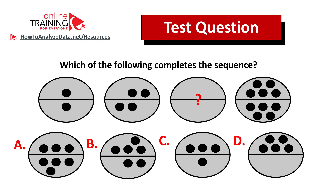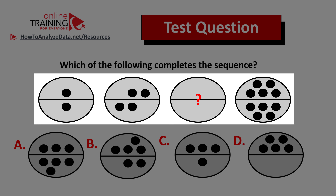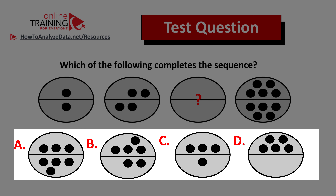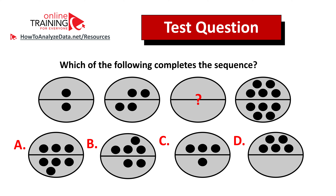Here's a tricky question testing analytical and pattern recognition skills. Which of the following completes the sequence? You're presented with a sequence of four ovals — the third is missing — and four choices: a, b, c, and d, all with similar ovals but with dots in different positions. Take 10 to 15 seconds, possibly stop the video, and see if you can figure out the answer.